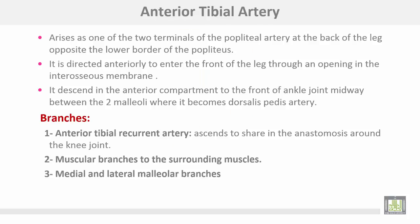The anterior tibial artery arises as one of the two terminal branches of the popliteal artery at the back of the leg, opposite the lower border of the popliteus muscle. It is directed anteriorly to enter the front of the leg through an opening in the interosseous membrane. It then descends in the anterior compartment to the front of the ankle joint, midway between the two malleoli, where it becomes the dorsalis pedis artery.